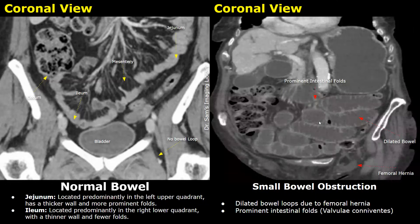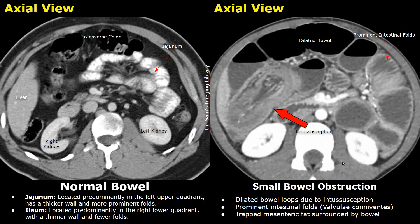In this case the small bowel obstruction was caused due to a femoral hernia. Normally no bowel loop is seen in the femoral canal, but in this image you can see bowel loops in the femoral canal. In this image intussusception is present — trapped mesenteric fat is surrounded by bowel indicating intussusception, and this was the cause of small bowel obstruction.